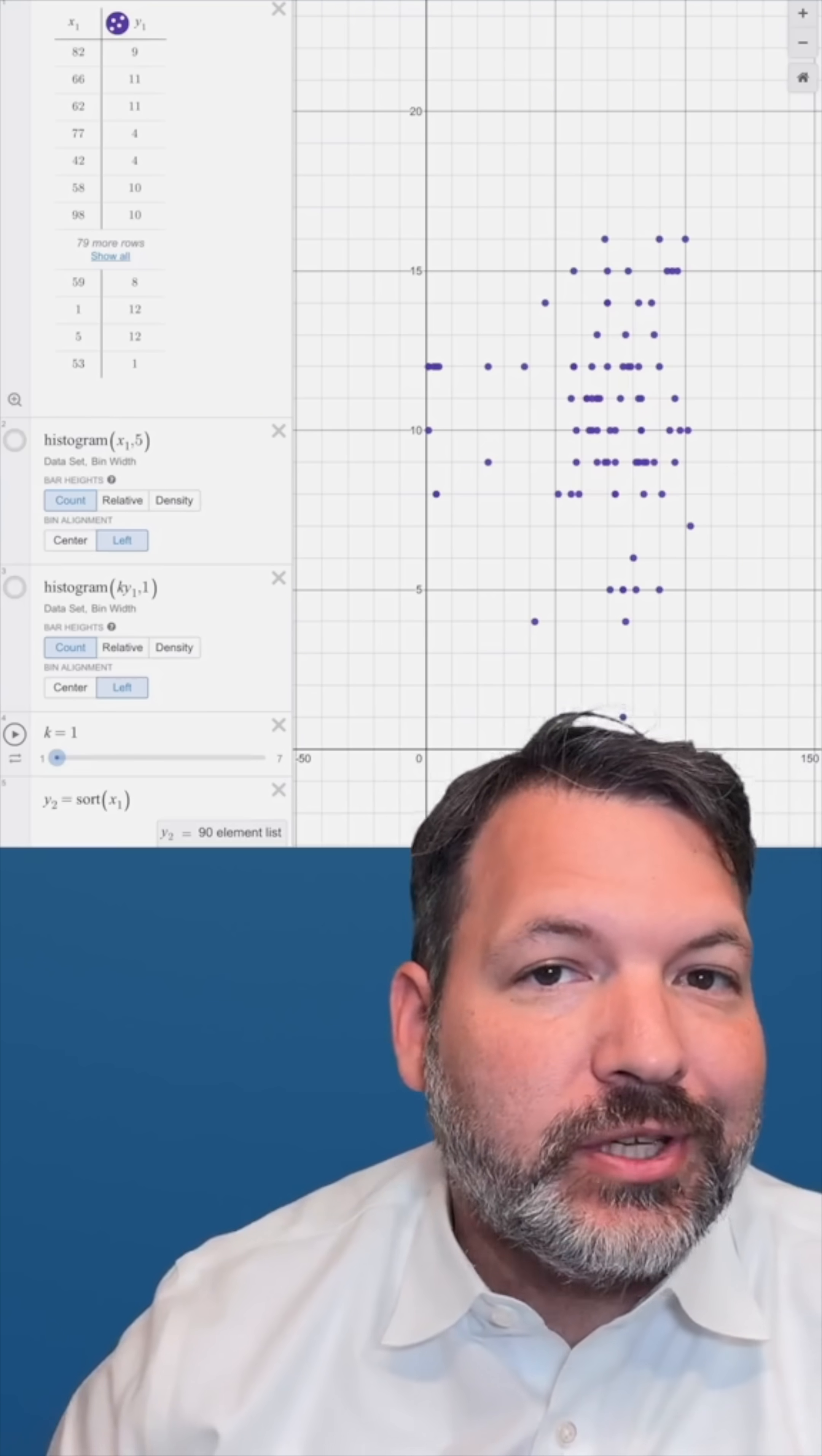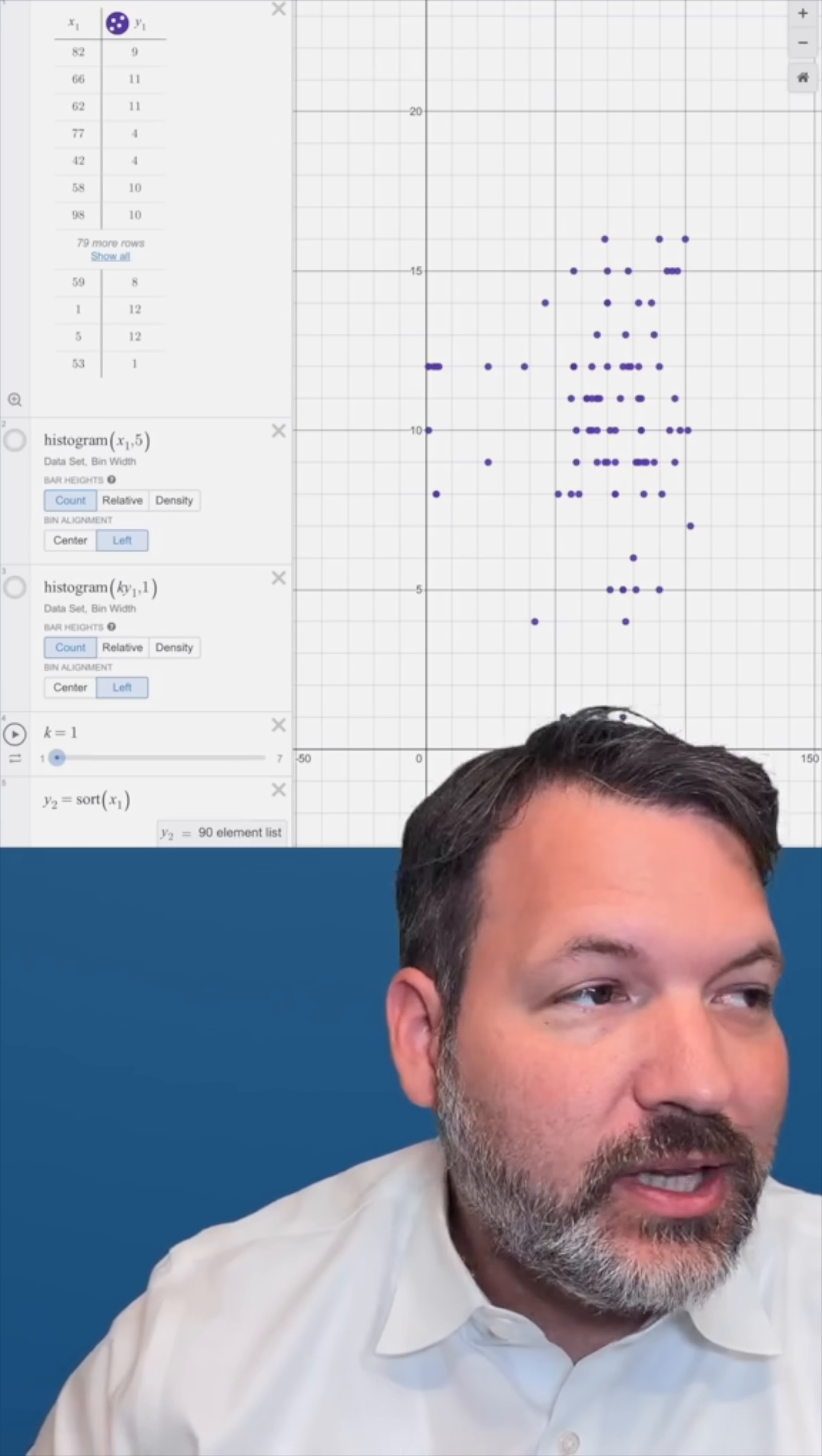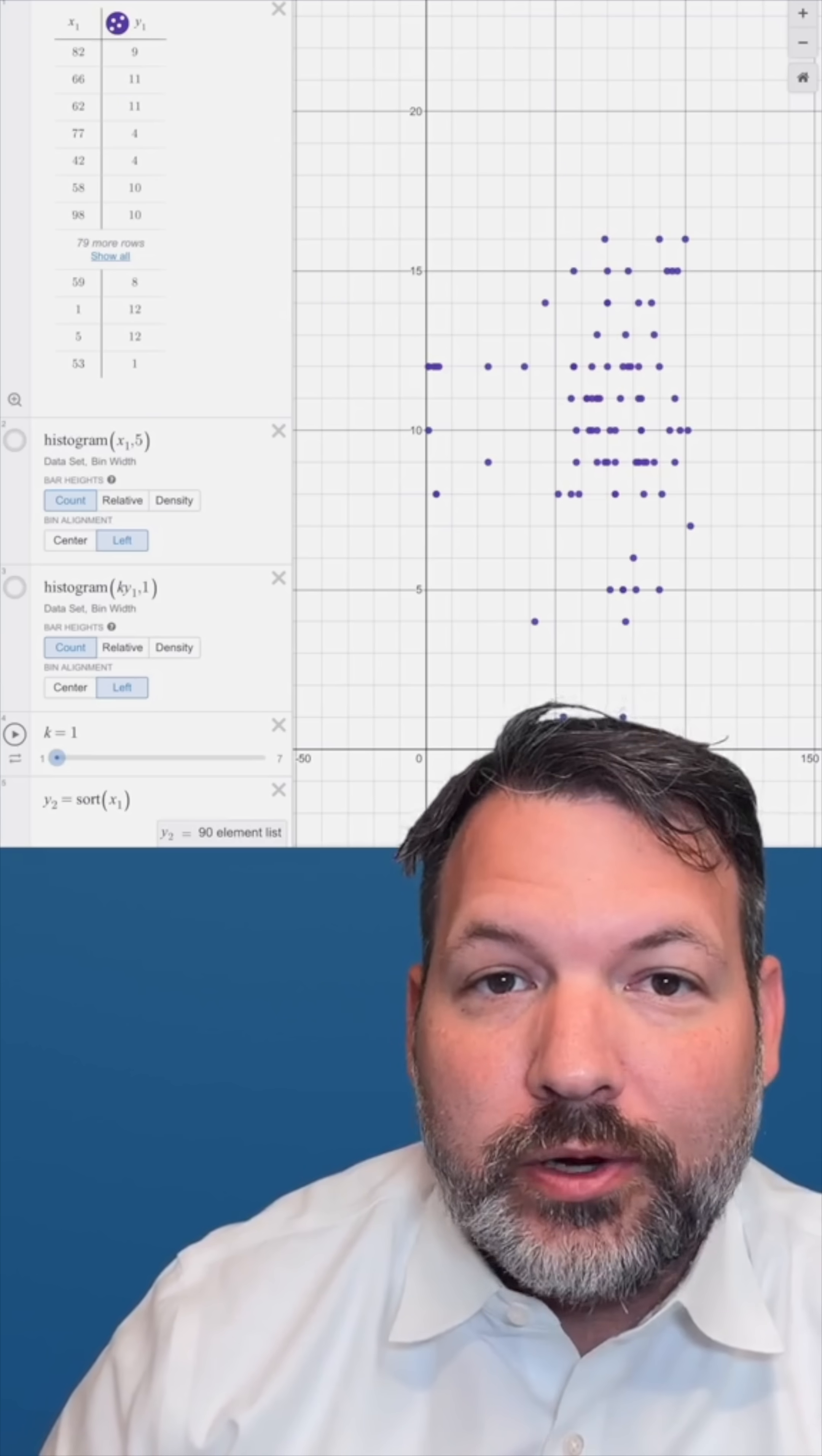If you just take a bunch of ages of dogs when they die and a bunch of ages of humans when they die and correlate those together, you'll see this roughly one to seven kind of relationship. It appears most of the time when they die, humans are about seven times as old as dogs are.